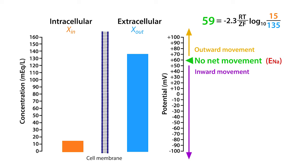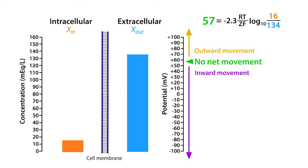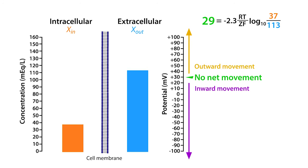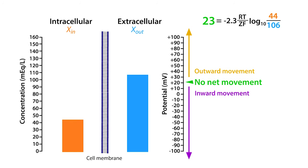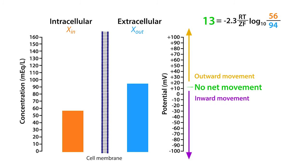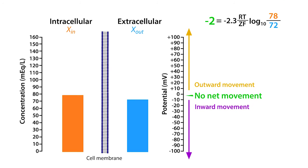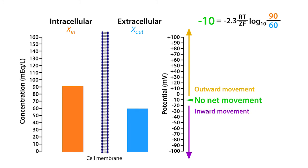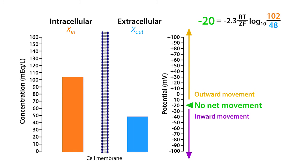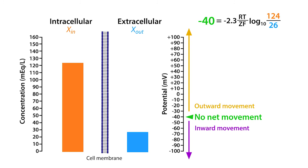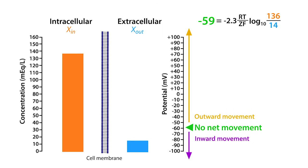Let's watch what happens to the equilibrium potential as the intracellular concentration is increased while the extracellular concentration is simultaneously decreased. Notice that as this happens, the equilibrium potential becomes less positive — in other words, it moves towards zero. Eventually, the equilibrium potential will reach zero millivolts when the intracellular and extracellular concentrations are equal. As the intracellular concentration begins to exceed the extracellular concentration, the equilibrium potential becomes increasingly more negative.